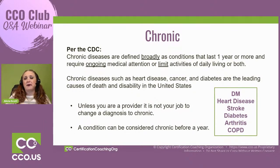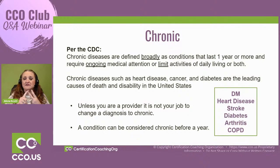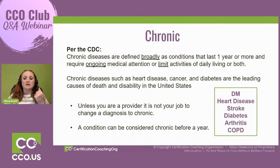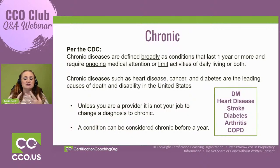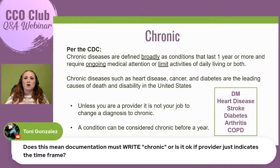What you need to know: first, the term chronic is broad and it doesn't have to last a year — it is usually a year or more if something gets stated as chronic. Third, the provider is the one that determines whether something is chronic or not. Diabetes, heart disease, stroke, arthritis, COPD — those are conditions that are considered chronic.